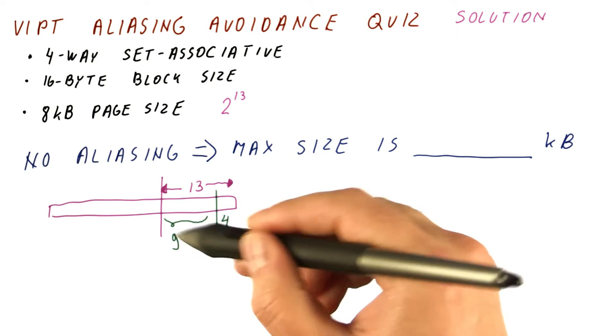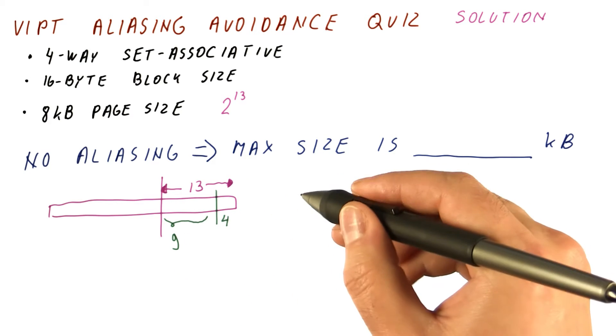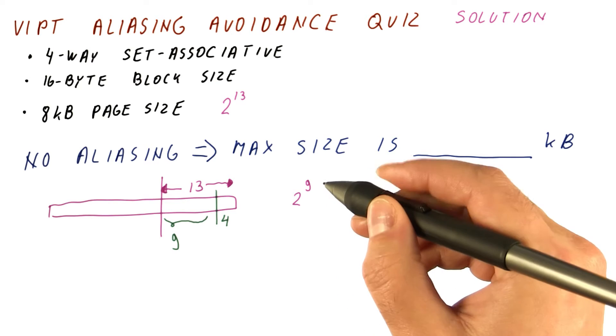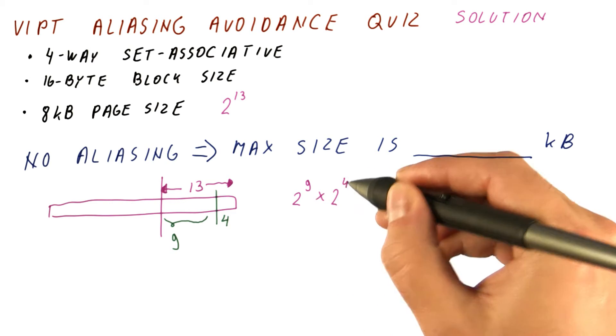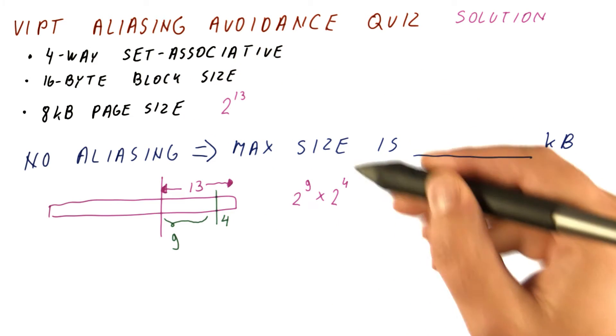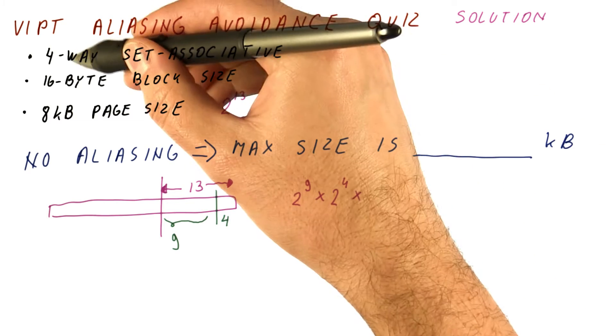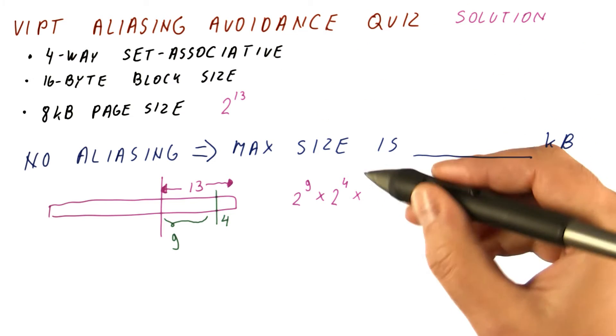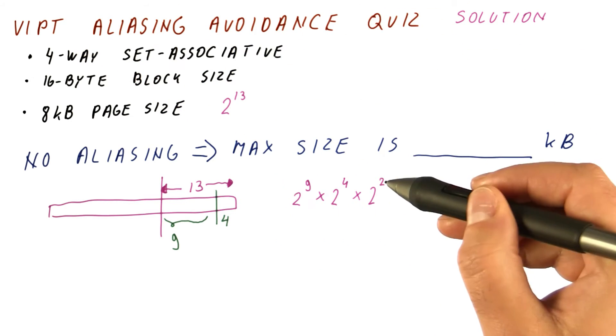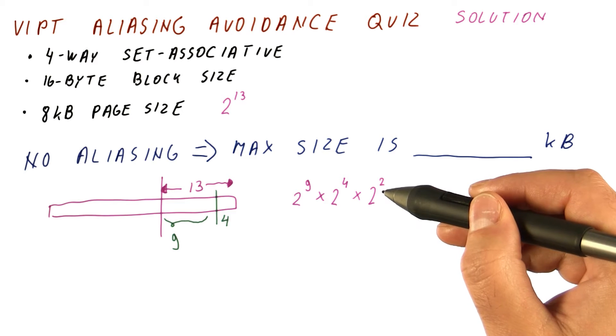So the maximum cache size will be when it has 2 to the 9th sets. So we have 2 to the 9th sets times 2 to the 4th bytes in each block times. It's a four way set associative cache. So we have 2 to the 2nd, 4 blocks in a set.